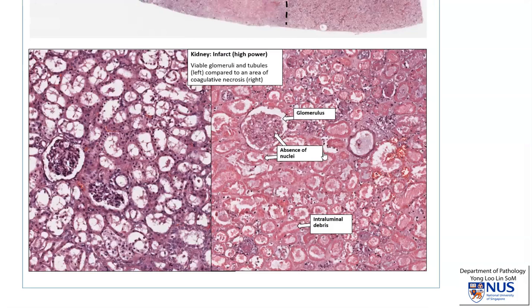When we look at high magnification, we can see a direct comparison: on the left is a normal, live, viable renal cortex with some glomeruli — we can clearly make out the nuclei. And here on the right is a portion taken from the infarcted area, and we can see that the glomeruli have lost their nuclei. Also, the tubular epithelium appears much more eosinophilic with loss of nuclei. This is classical for coagulative necrosis.